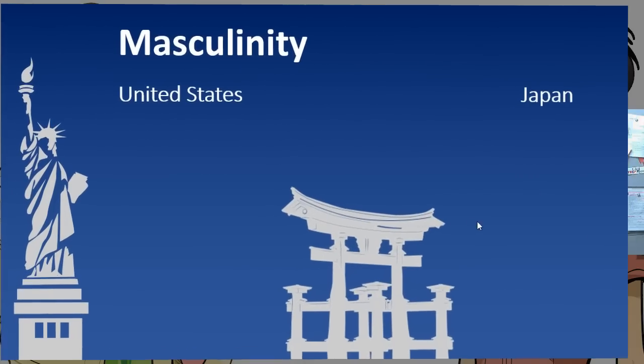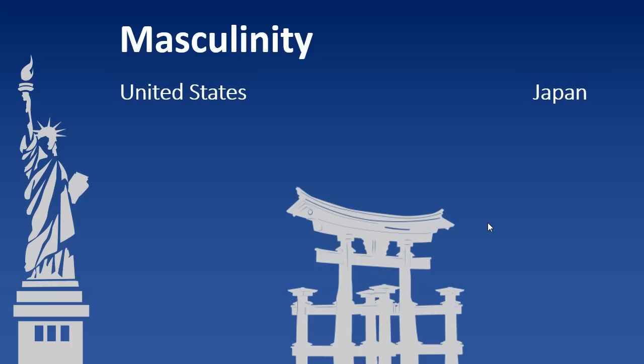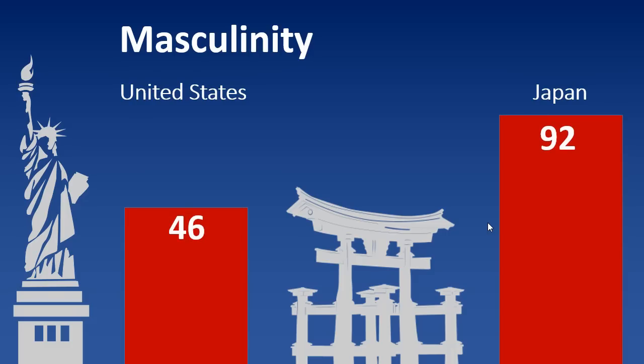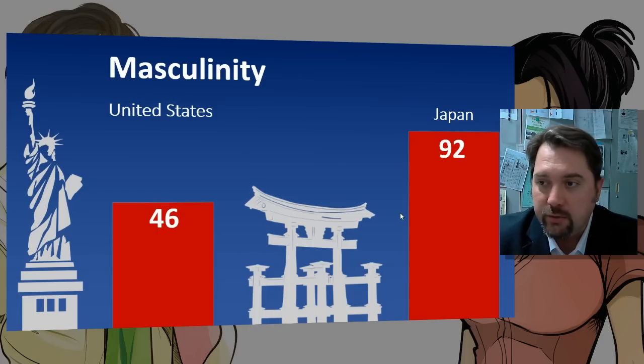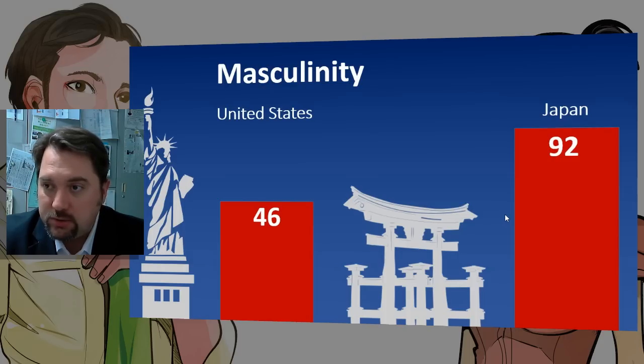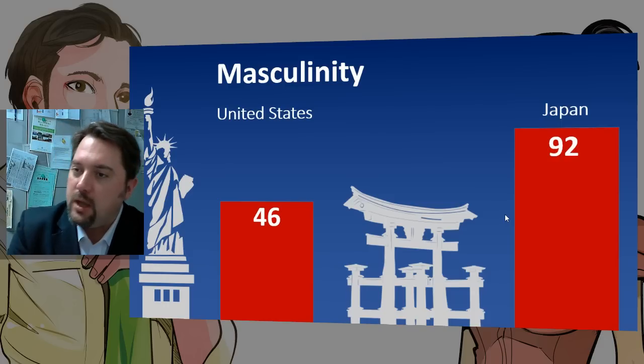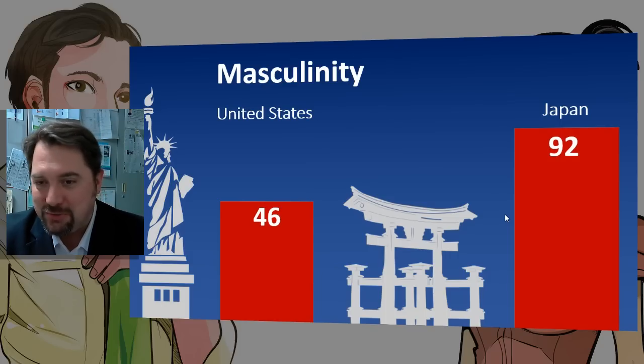If you said Japan is high, you are correct. Japan is also one of the highest in the world in this ranking. As an example, among the top 50 largest corporations in Japan, there was only one or two female board members total — and that woman is actually a foreigner, not Japanese. In the States, it's a little more equal, with women going for more leadership roles and more house husbands.